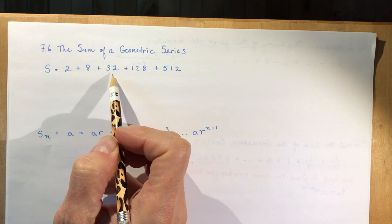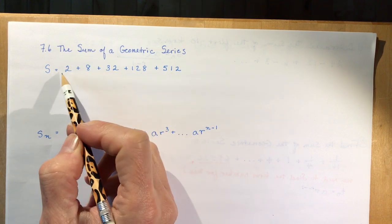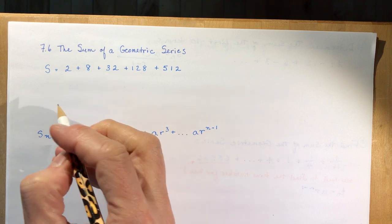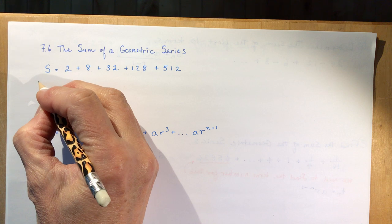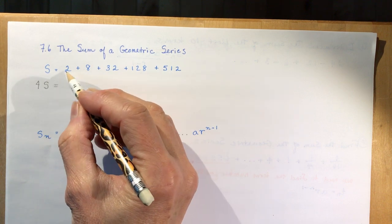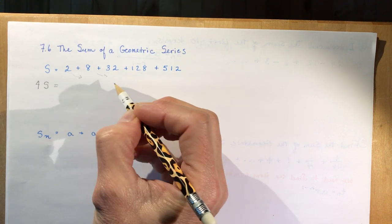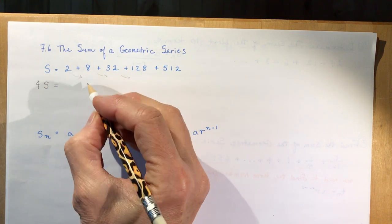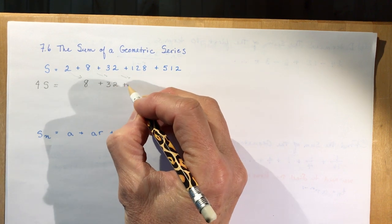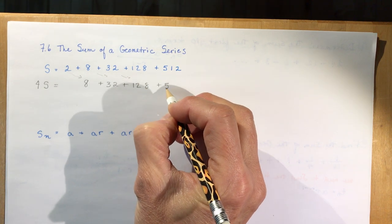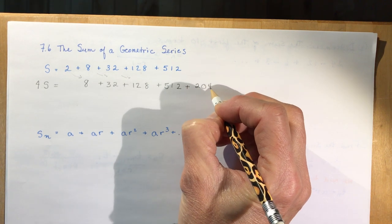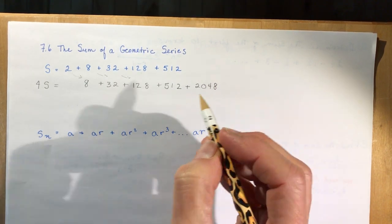We have a very basic equation where r is 4 — every term is multiplied by 4 to get the next term. So if I write underneath, I'm going to do 4 times this sum and move the 4 times over one by one. So 4 times 2 gives me 8, and 8 times 4 gives me 32. You can see I'm going to be copying these numbers exactly the same, except at the end I have one more number: 4 times 512 is 2048.